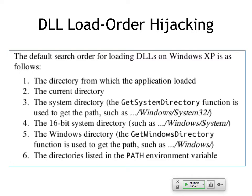The search continues through the current working directory, the system directory, the 16-bit system directory, the Windows directory, and anything else in the path. Every piece of installed software typically adds more to the path. So you could put a DLL with the same name in any of these places and it will accidentally load the wrong DLL. This is how Stuxnet worked to destroy the nuclear isotope separators in Iran — the USB stick had a program and a DLL right on the stick, which would load into memory instead of getting the correct DLL from the system.